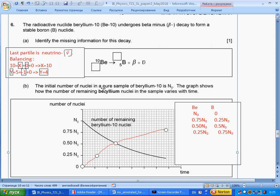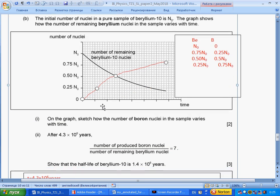The total initial number of nuclei is N₀. The graph shows the number of remaining beryllium in the sample with time. On the graph, sketch how the number of boron nuclei varies with time. I made a table. Beryllium turns into boron. First N₀, zero. Then 0.75N₀ beryllium, the rest is boron. 0.50N₀, the rest is boron. 0.25N₀, the rest is boron. I marked here four points and draw approximately a smooth curve.